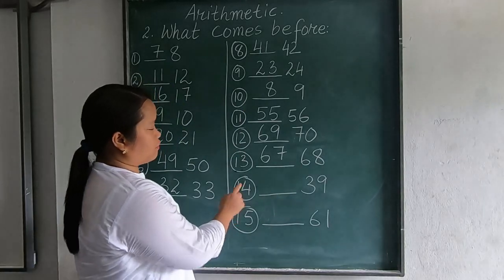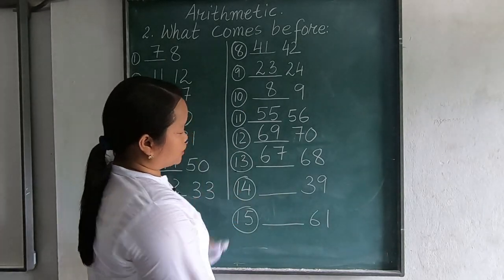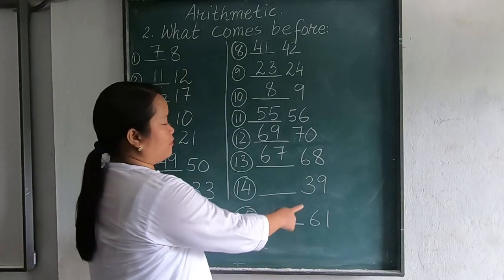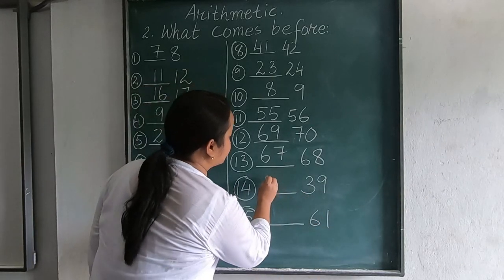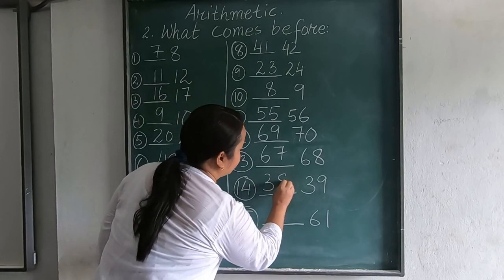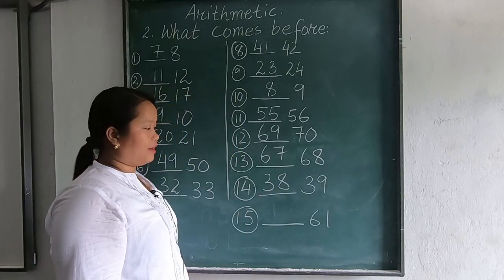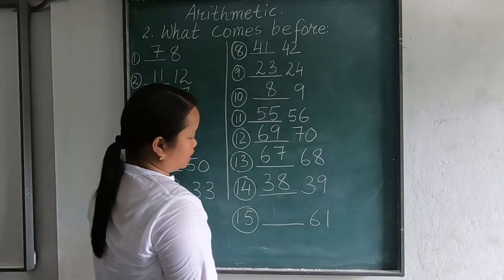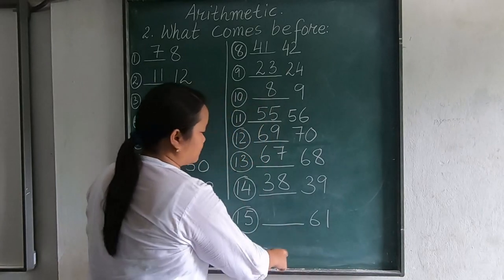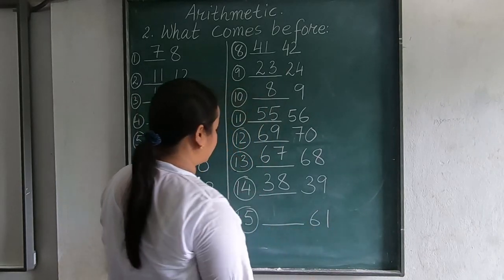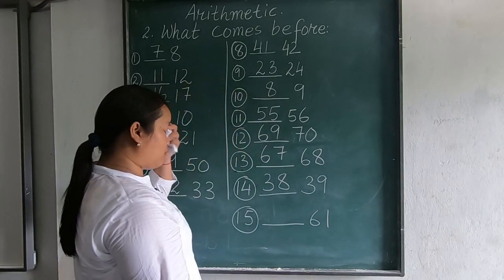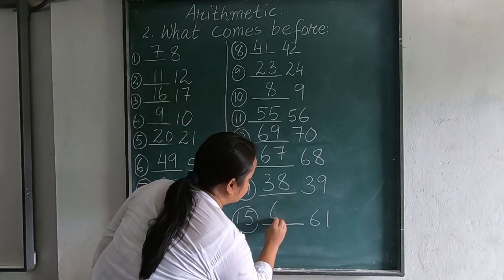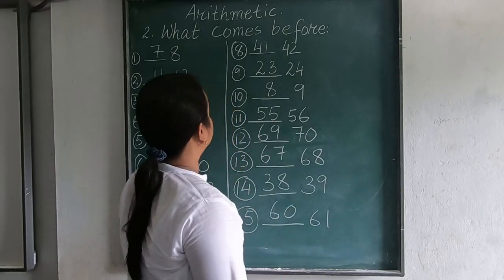The next question, question number 14, 68. And in last question, 15. In question number 15, there is 61. So before 61, what numbers come before 61? 60.